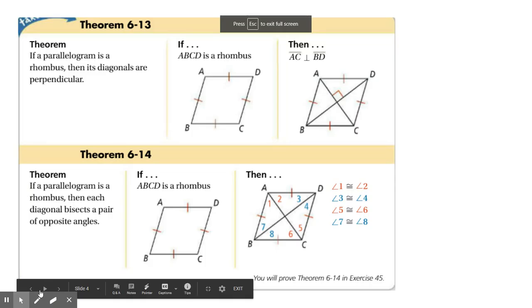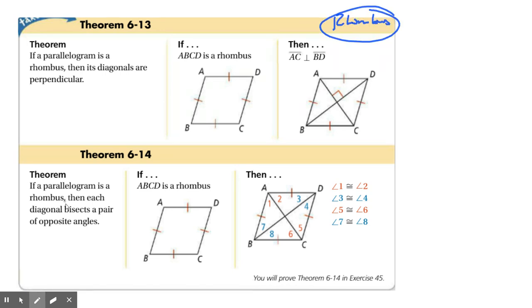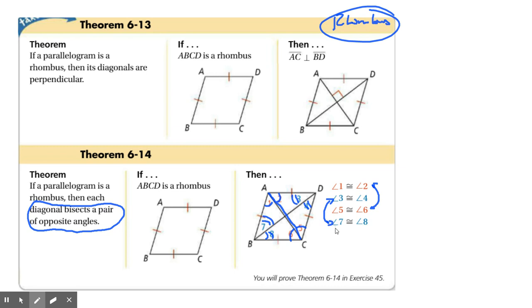The other special property of a rhombus is that a diagonal bisects a pair of opposite angles. So in this picture, AC bisects angle A and angle C. Because a rhombus is a parallelogram, the big angle A and the big angle C are congruent as well. So if you take a diagonal, it bisects a pair of opposite angles into four smaller angles, but all four angles are the same — two sets of four congruent angles.